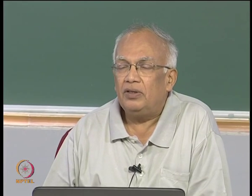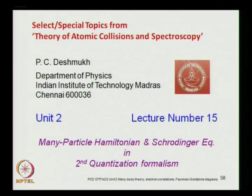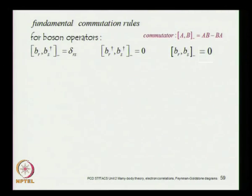We have set up the essential machinery to start working with second quantization techniques, which are very powerful techniques to deal with a many-body system, whether it is a Bose system or a Fermi system. Today I will introduce how a many-particle Hamiltonian and the Schrödinger equation are set up in the second quantization formulation. We have the fundamental commutation rules for the boson operators; the statistics is now put into the creation and destruction operators and their commutation properties.